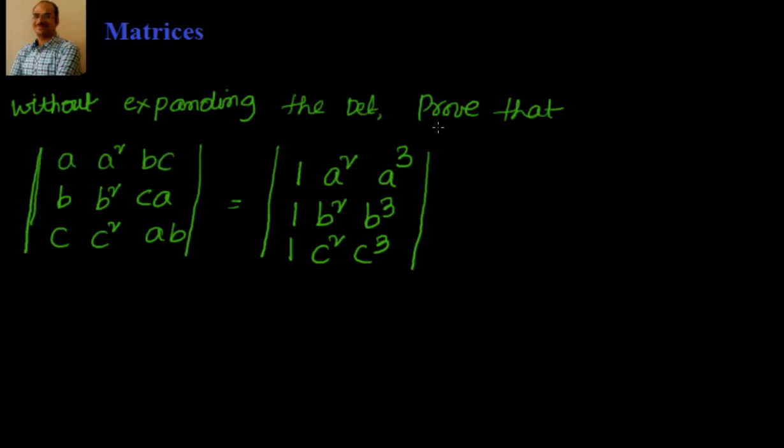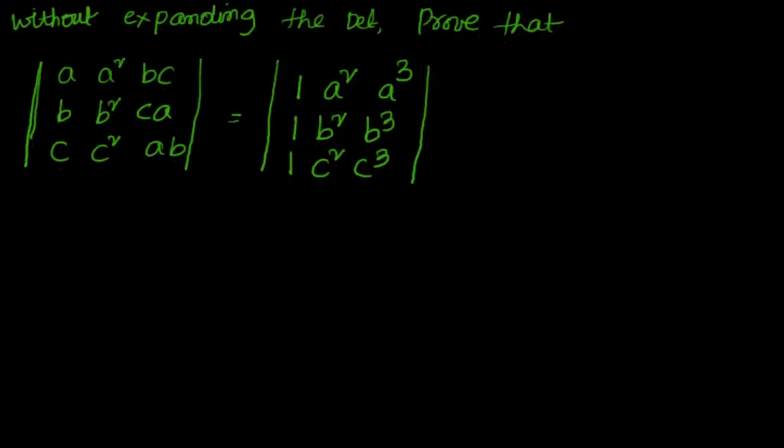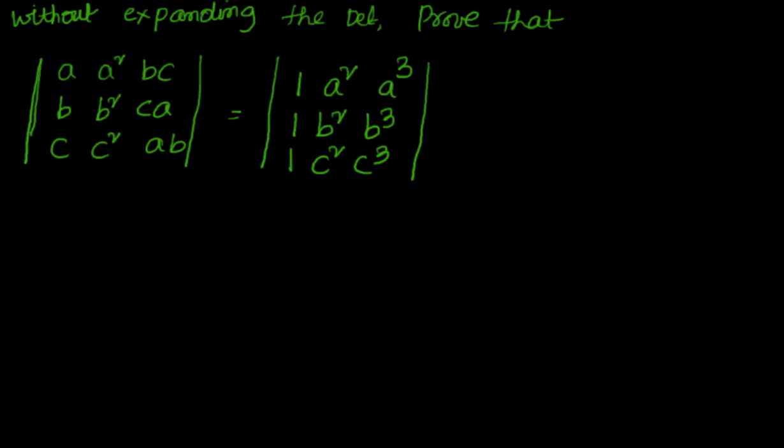Without expanding the determinant, prove that the determinant with elements a, a square, bc in first row; b, b square, ca in second row; c, c square, ab in third row equals the determinant with 1, a square, a cube; 1, b square, b cube; 1, c square, c cube. Now let's spend a couple of minutes and try to understand how to go ahead with the approach. We cannot expand it, that means we have to use the properties of the determinants.